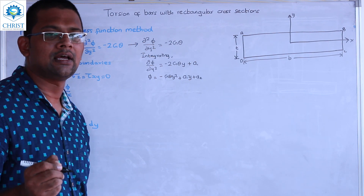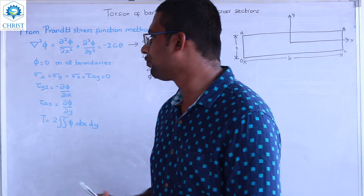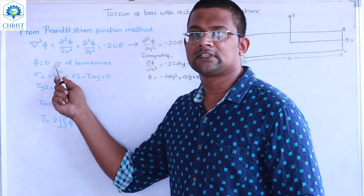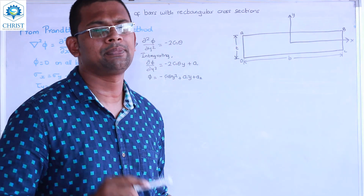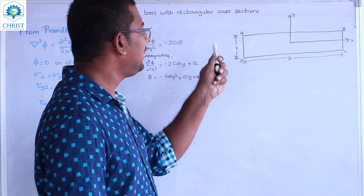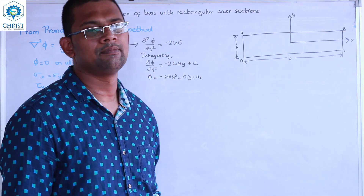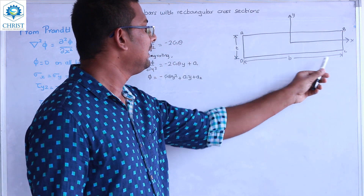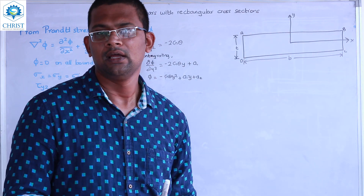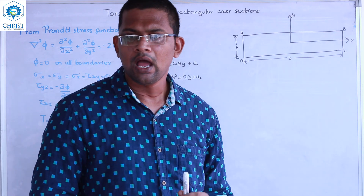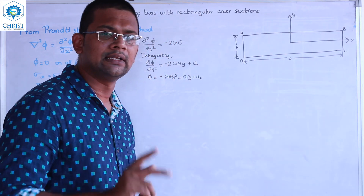We need to remove the constants of integration by introducing boundary conditions. The value of the stress function φ is equal to zero on all the boundaries. So φ equals zero on all boundaries A, B, C, and D — the four boundaries of the rectangular section.